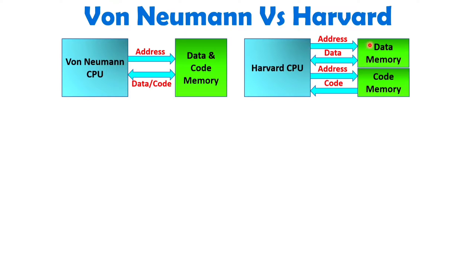With Harvard architecture, for data memory we have a separate address, and for code memory we also have a separate address. We access data with bi-directional access, and for code we are just reading. Code means program. So with Harvard architecture, data memory and code memory are separate, and addressing is also separate.